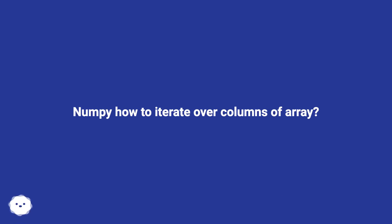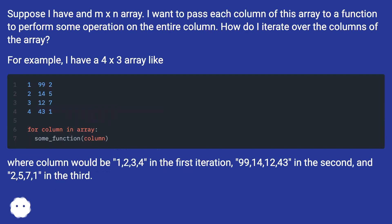NumPy: How to iterate over columns of array. Suppose I have an m x n array. I want to pass each column of this array to a function to perform some operation on the entire column. How do I iterate over the columns of the array?